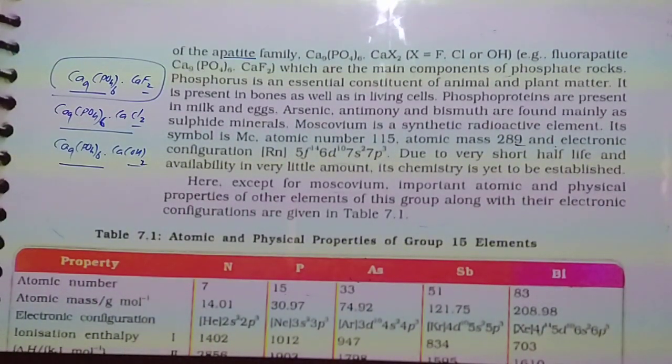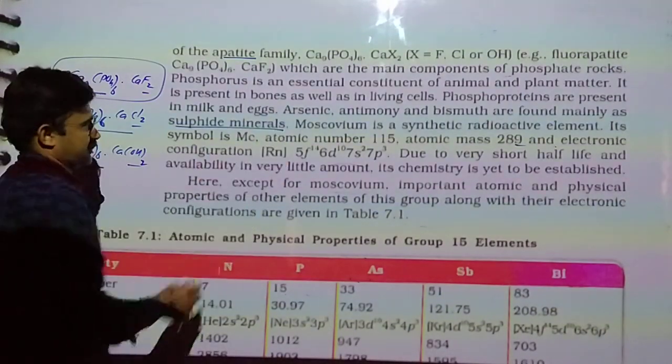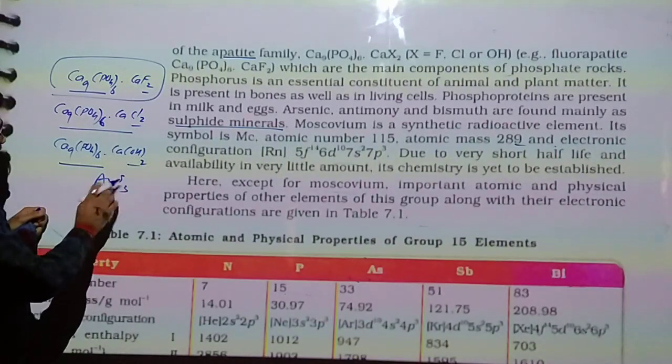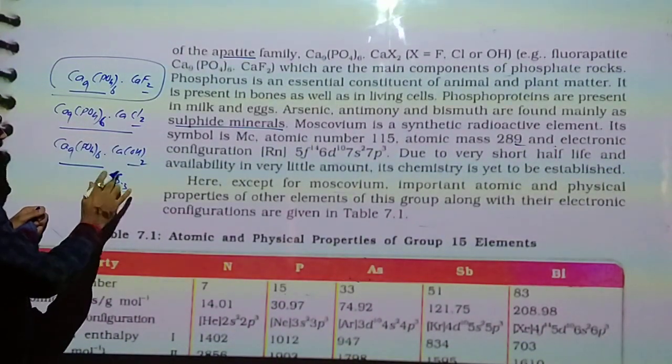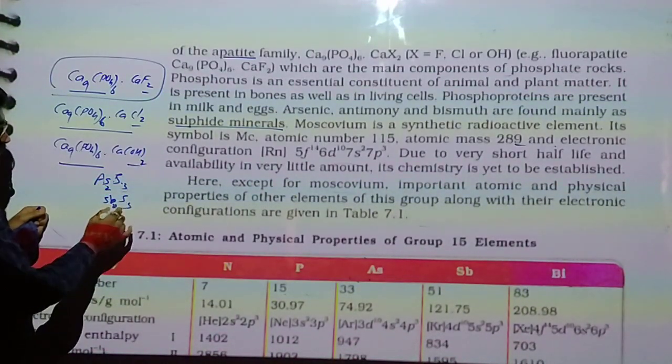Phosphorus is an essential constituent of animal and plant matter. It is present in bone as well as living cells. Phosphoproteins are present in milk and eggs. Arsenic, antimony, bismuth are found mainly in sulfide minerals. We can derive in earth's crust as arsenic sulfide, antimony sulfide, bismuth sulfide.